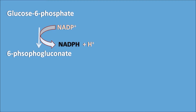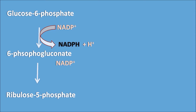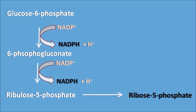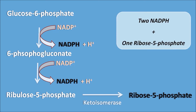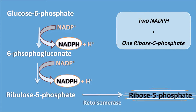6-phosphogluconate is then converted into ribulose-5-phosphate, again converting NADP+ into NADPH and H+. Ribulose-5-phosphate is then converted into ribose-5-phosphate by the enzyme ketoisomerase. In this way, one molecule of glucose-6-phosphate produces 2 NADPH molecules plus 1 ribose-5-phosphate, giving a ratio of 2:1.